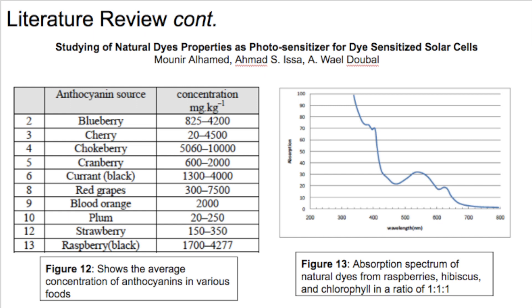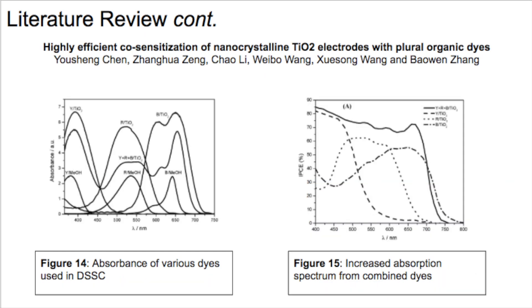This principle can be applied to other organic dyes as well. Finally, Chen et al. assessed the absorption spectrum of various dyes commonly used in dye-sensitized solar cells. The individual absorption spectra for the individual dyes are shown in Figure 14. Figure 15 represents the combined dye created for this experiment, and it is clearly shown to have a greater absorption spectrum than each of the individual dyes.